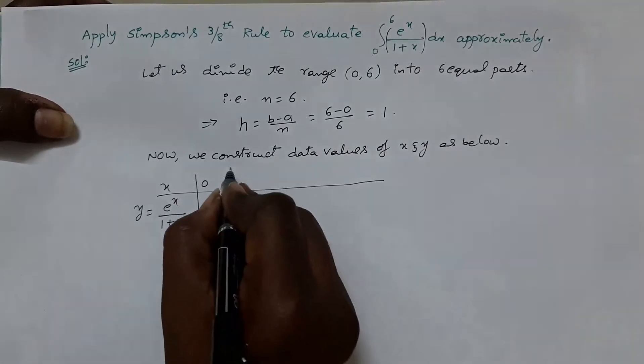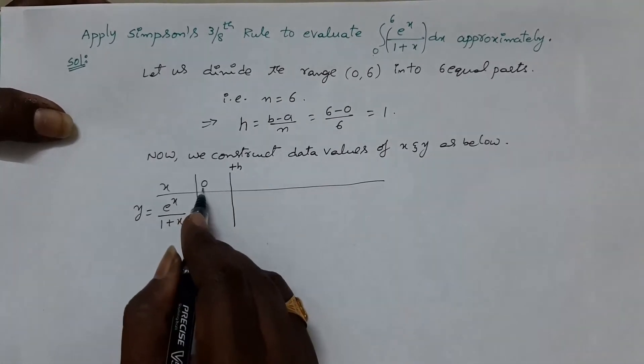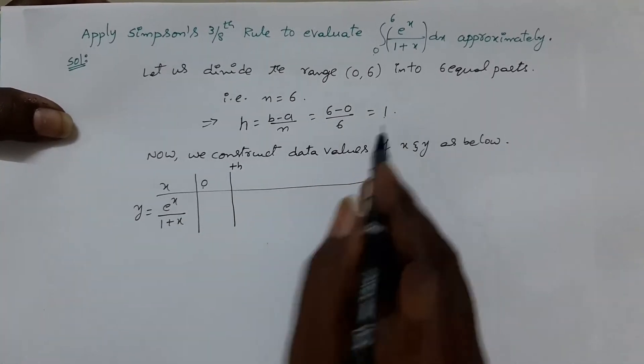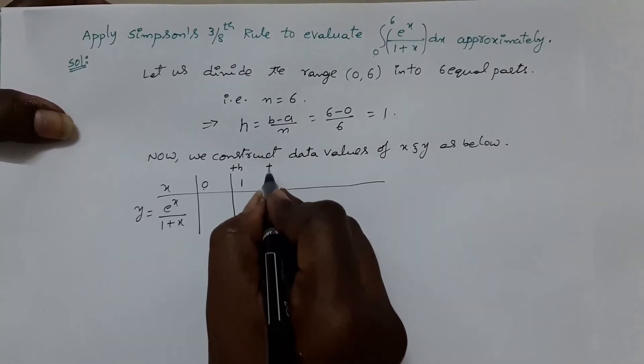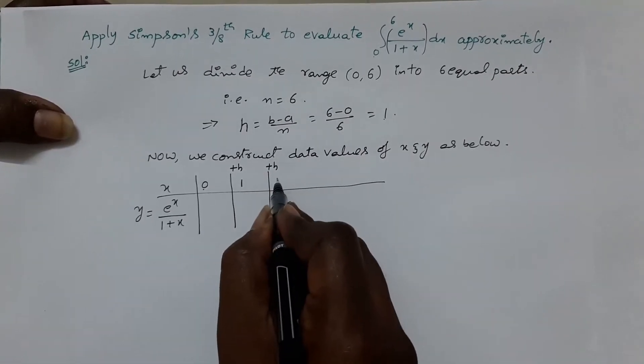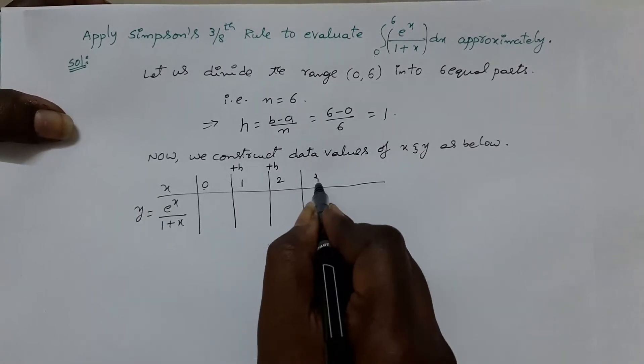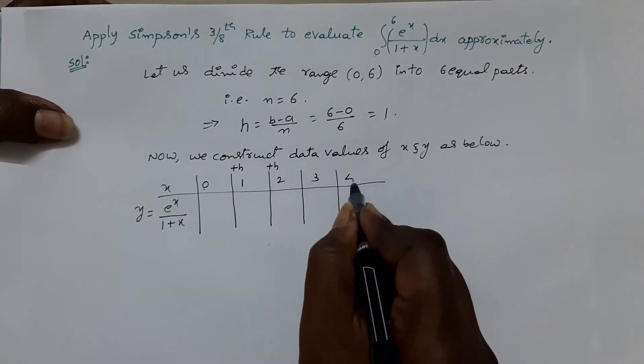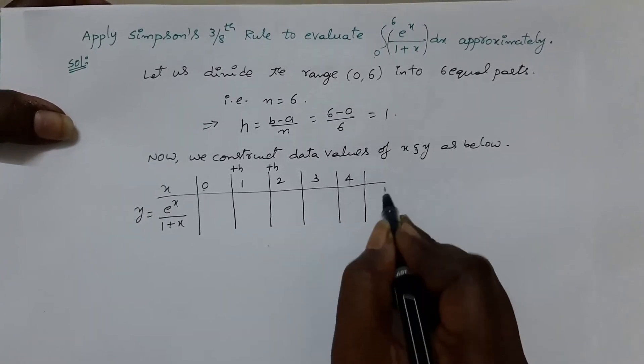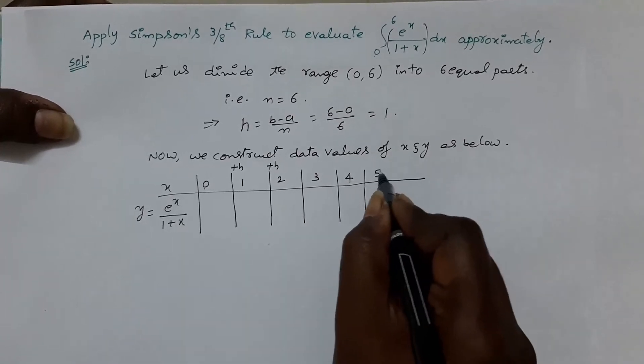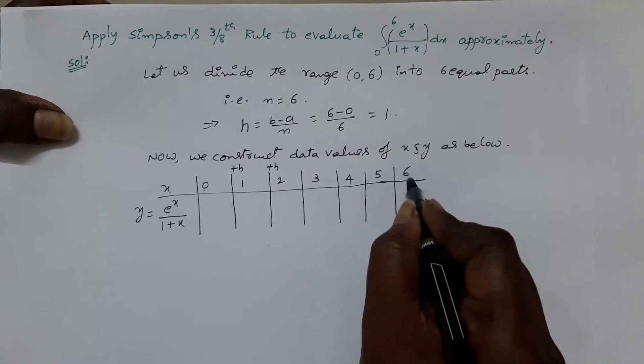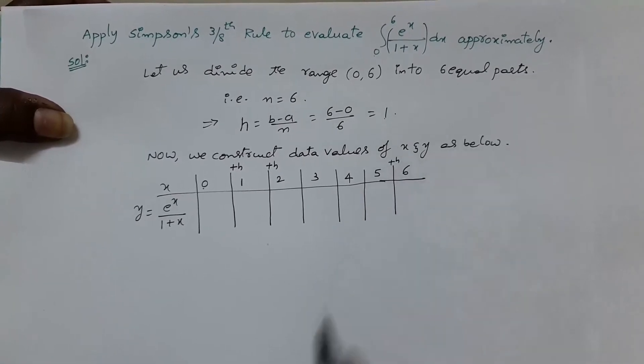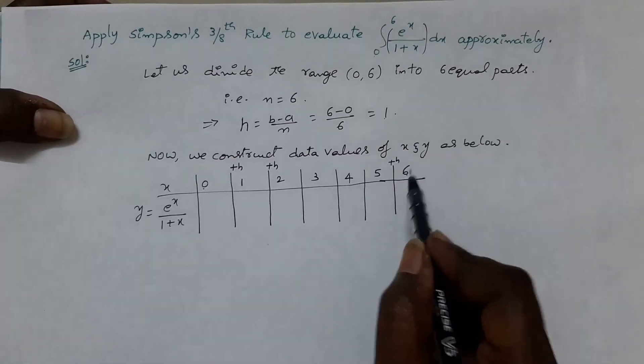And, add lower limit 0 to h value. So, 0 plus 1 is 1. Again, you can add the step size. 1 plus 1 is 2, then 3. Again, you can add h value. You will get 4. Again, add h value. You will get 5. 5 plus 1 again, which is 6. So, we reached the upper limit.